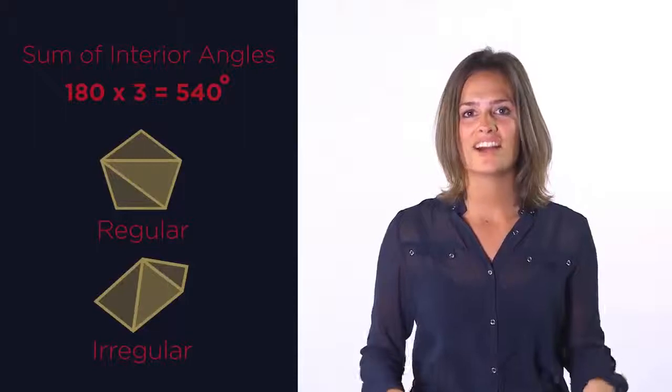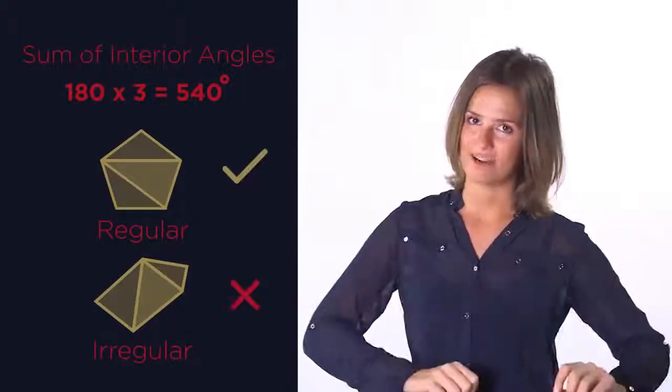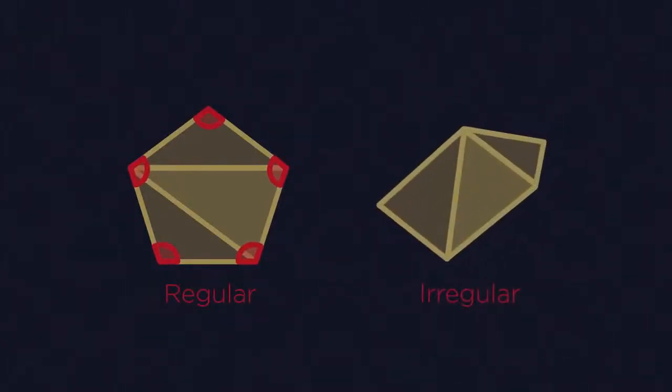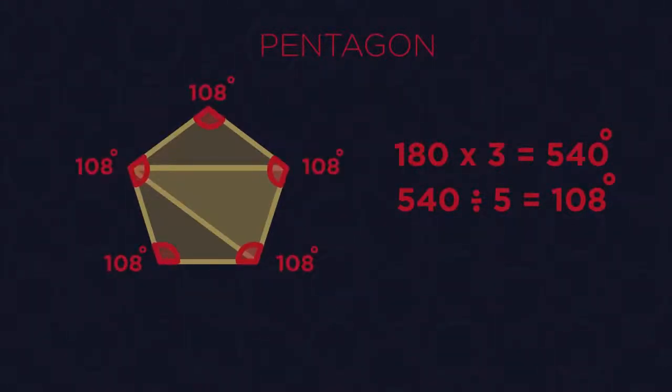But to work out the size of one interior angle, it has to be a regular polygon. Regular polygons have all equal sides and angles, whereas irregular are different. The sum of interior angles for a pentagon is 540. So 540 divided by 5 angles is 108 degrees each.